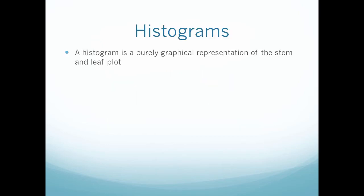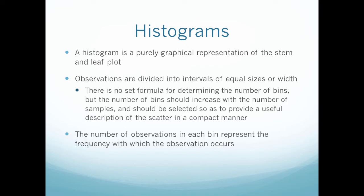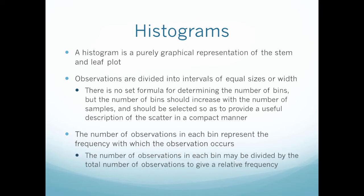A histogram is a purely graphical representation of the stem and leaf plot. Observations are divided into intervals, often called cells or bins. Bins are typically of equal sizes or width. There is no set formula for determining the number of bins, but the number of bins should increase with the number of samples and should be selected to provide a useful description of the scatter in a compact manner. The number of observations in each bin represents the frequency with which the observation occurs, and may be divided by the total number of observations to give a relative frequency.